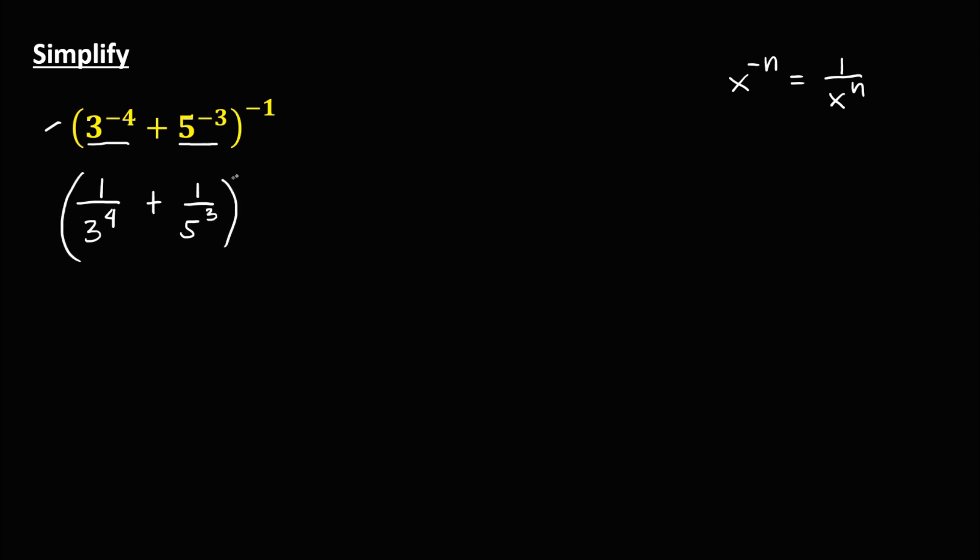then to the power negative 1. To simplify, we have 1 over 3 to the power 4, that's 81, plus 1 over 5 to the power 3, that's 125, then to the power negative 1.